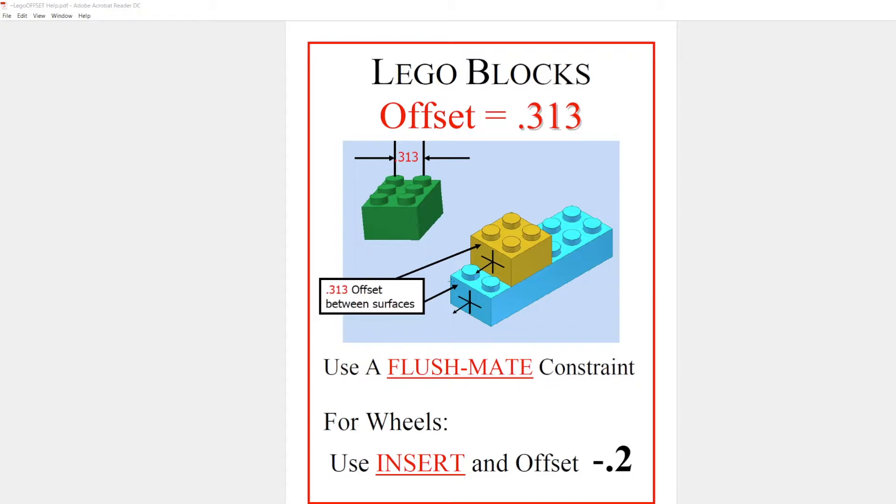Make it 313 times 2 and you'll see two sets of pins exposed, or times 3, times 4, however many you'd like to offset the block back.